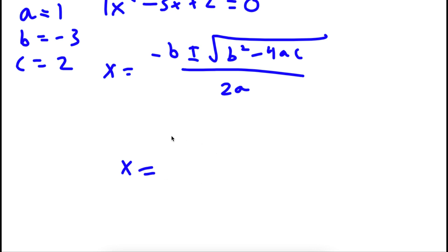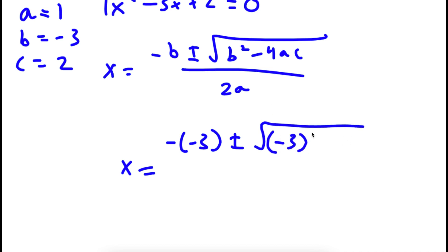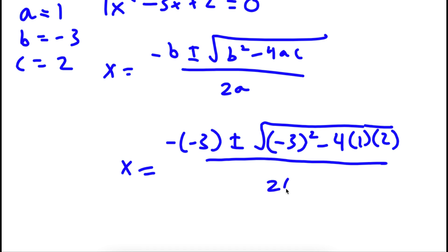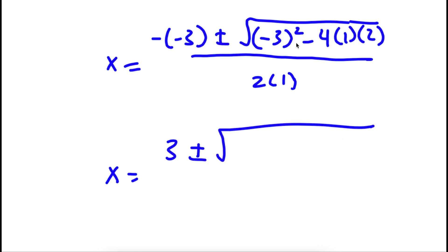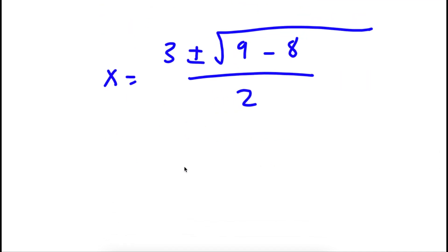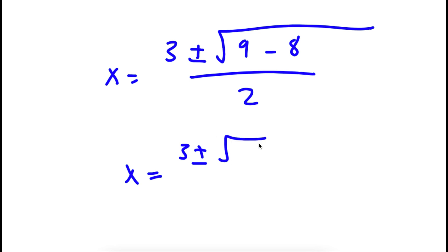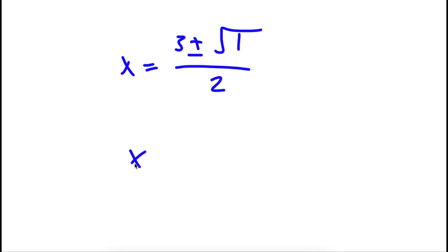So I have x is equal to negative negative 3 plus or minus the square root of negative 3 squared minus 4 times 1 times 2, all over 2 times 1. Negative negative 3 is positive 3, and negative 3 squared is positive 9. So I have 3 plus or minus the square root of 9 minus 8 over 2, which is 3 plus or minus the square root of 1 over 2. The square root of 1 is 1, so x equals 3 plus or minus 1 over 2.